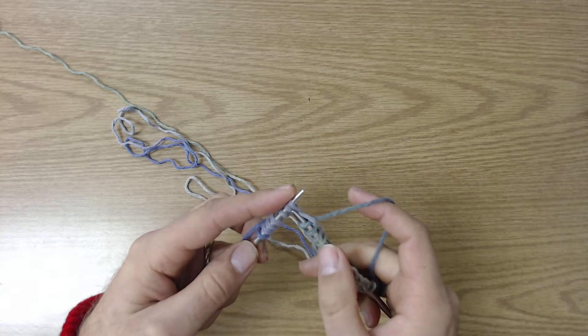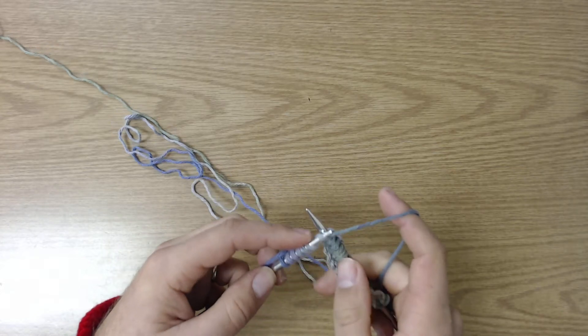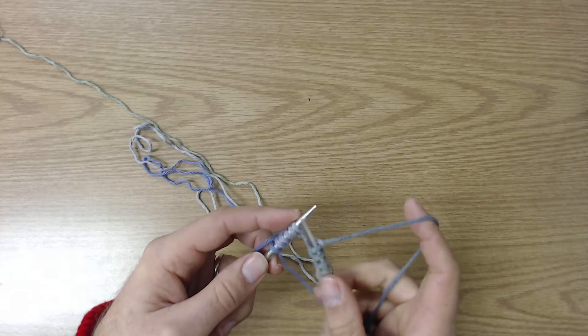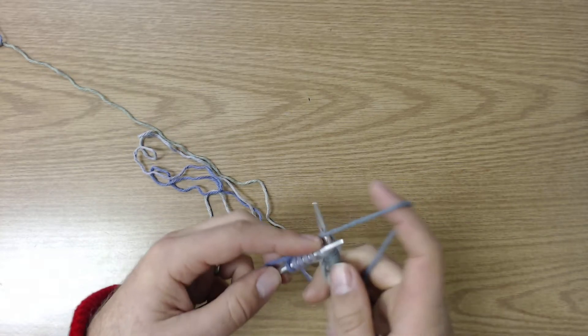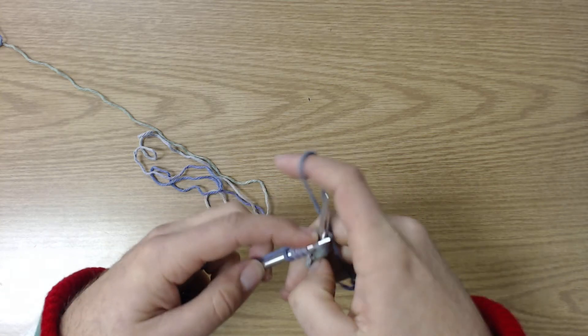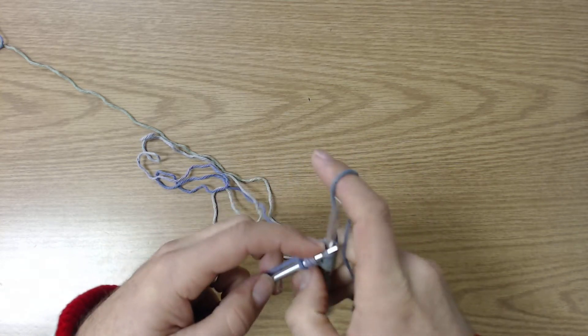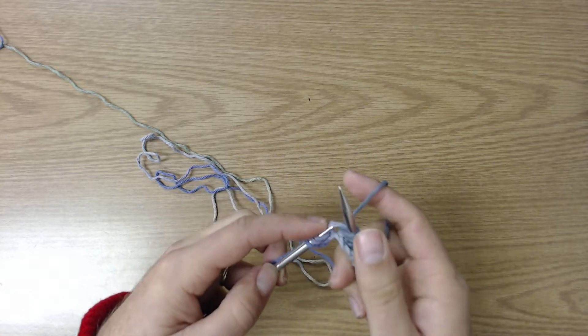The bad thing being it can sometimes be difficult to add new rows or to get your needle in where you need it to be. Fortunately, I loosen up as I go. So that's kind of good. I don't want to be too tight or too loose as you go through. You want to kind of maintain consistency.